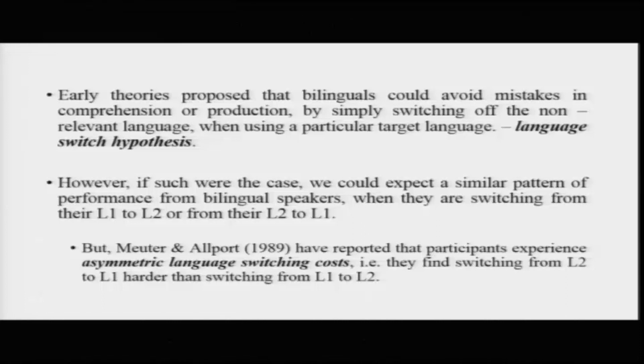This experiment was done by Meuter and Allport in 1989. They basically asked their participants to name Arabic numerals in Arabic and English, creating what is called a language switching experiment. In the typical design, numbers come up and you have to name each of them in English or Arabic, with the language signaled by a cue — for example, a red background means name it in English, a green background means name it in Hindi. There will be passages where you are not switching and passages where you are switching from English to Hindi and Hindi to English. Participants have four kinds of trials: English non-switch, Hindi non-switch, English-to-Hindi switch, and Hindi-to-English switch.